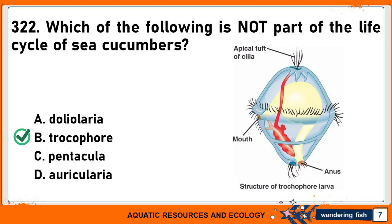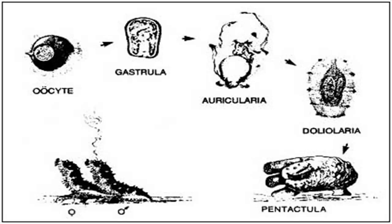The trocophor larva is part of the life cycle of molluscs, but not of sea cucumbers. Doliolaria, Pentacula, and Auricularia are all part of the life cycle of sea cucumbers.